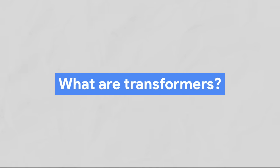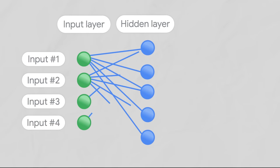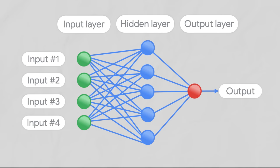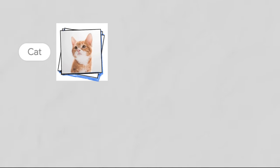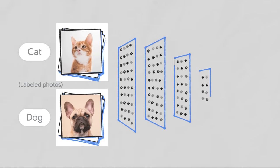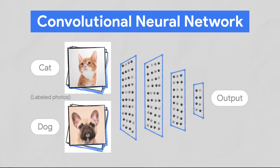So what is a transformer? It's a type of neural network architecture. Neural networks are a very effective type of model for analyzing complicated data types like images, videos, audio, and text. But there are different types of neural networks optimized for different types of data. Like if you're analyzing images, you'd typically use a convolutional neural network, which is designed to vaguely mimic the way that the human brain processes vision.